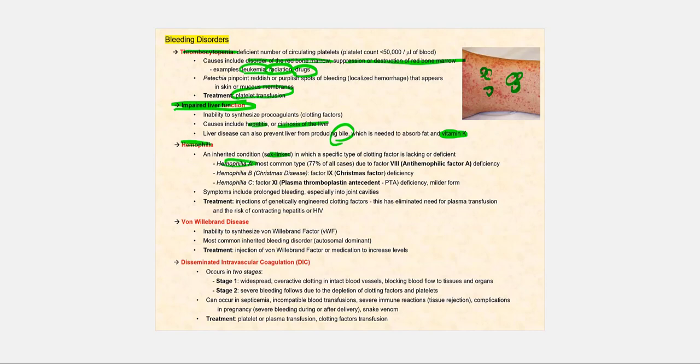So in the case of hemophilia A, which happens to be the most common, 77% of hemophilia patients have hemophilia A. The clotting factor that's missing or deficient is factor VIII, also known as anti-hemophilic factor A.